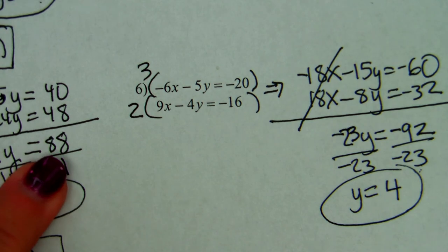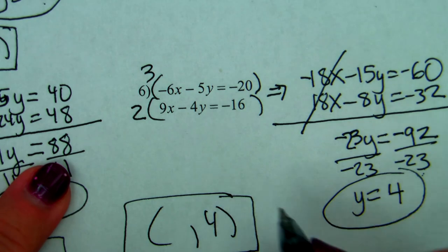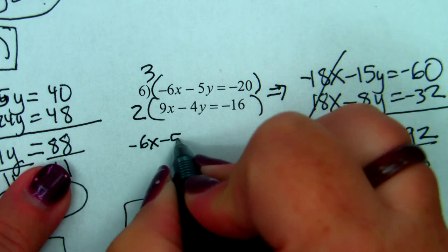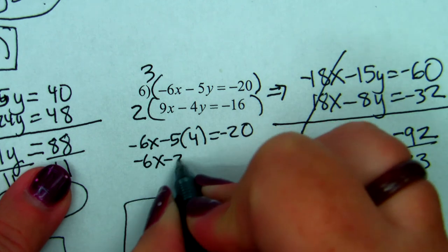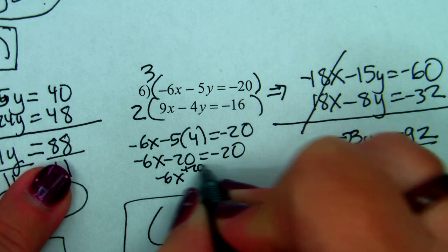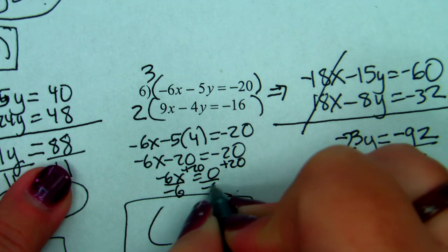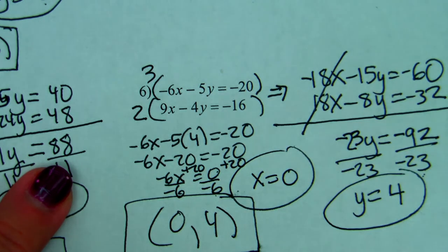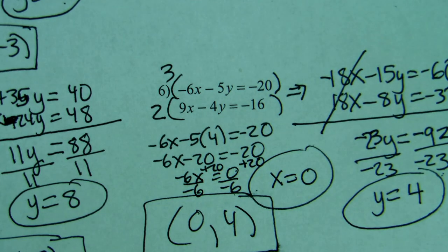Then you pick one of the equations to substitute back in. Y equals 4 is our y coordinate, we need to find x. So: negative 6x minus 5 times 4 equals negative 20. Negative 6x minus 20 equals negative 20. Add 20 to both sides — it makes it 0. Divide by negative 6. 0 over anything is 0, so x equals 0. Remember: 0 can be in the numerator, just not the denominator.